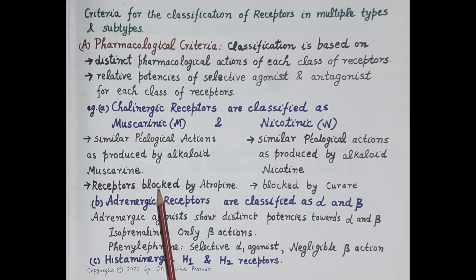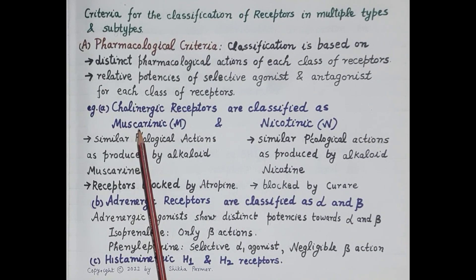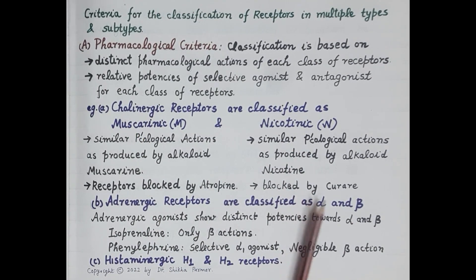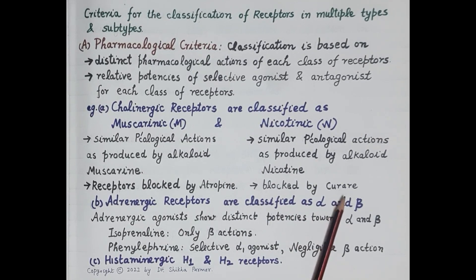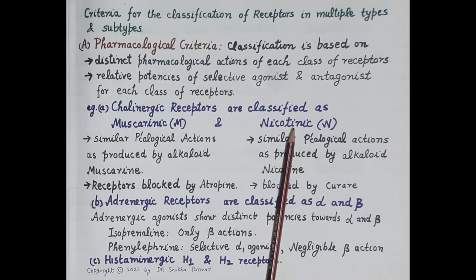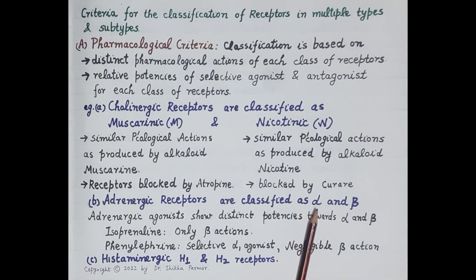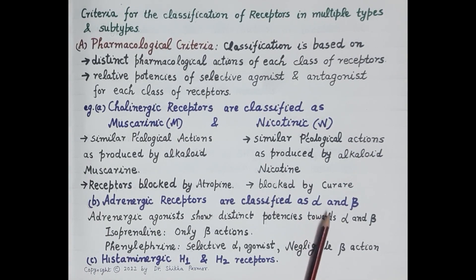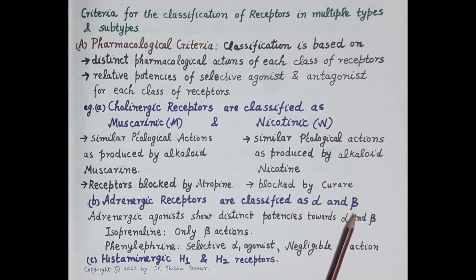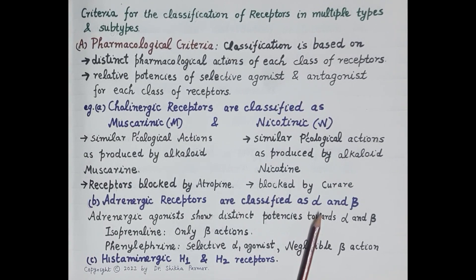Muscarinic receptors are blocked by atropine, so atropine is a specific antagonist for muscarinic receptors, whereas nicotinic receptors are blocked by curare, which is the specific antagonist for nicotinic receptors. Similarly, adrenergic receptors are classified as alpha receptors and beta receptors. Alpha receptors are further subdivided as alpha-1 and alpha-2, and beta receptors as beta-1, beta-2, and beta-3. The endogenous ligands for alpha and beta receptors are adrenaline and noradrenaline.